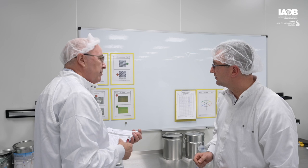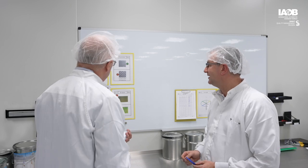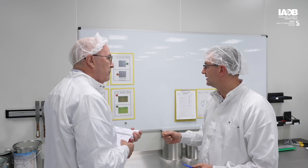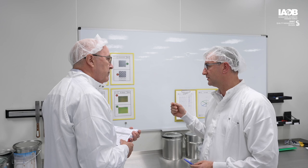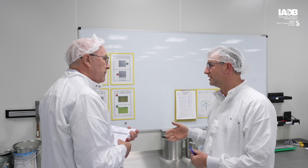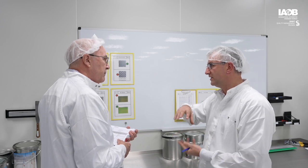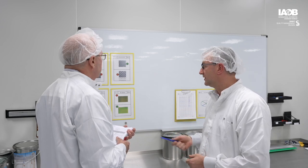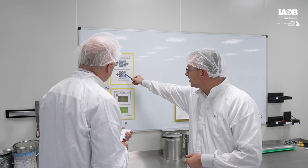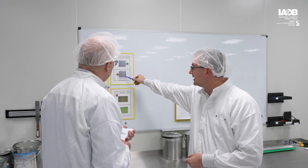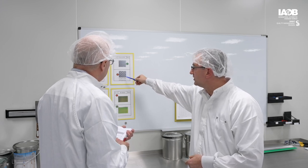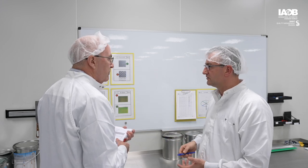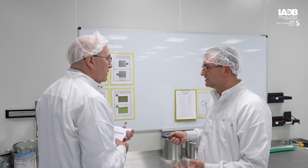We print multi-layer decors, and this means the first, second, and third layer have to fit together. And if there is an offset, on the end product there will be a visible misfit.